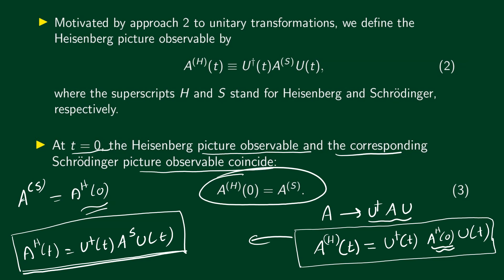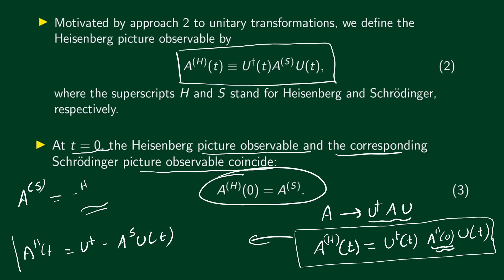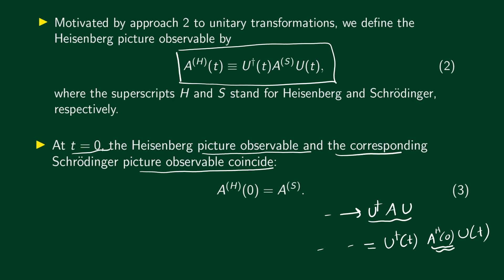Given the Schrödinger picture operator — which is the same as the Heisenberg picture operator at time t₀ — we can find the Heisenberg picture operator at any time using A^H(t) = U†(t) A^S U(t). Conversely, if we are given the Heisenberg picture operator at time t, we can find the Schrödinger picture operator from it.